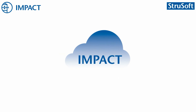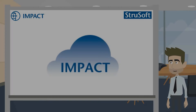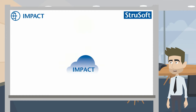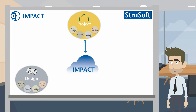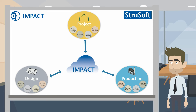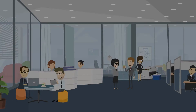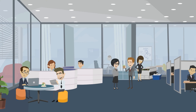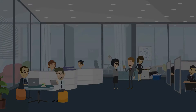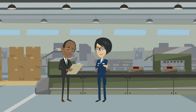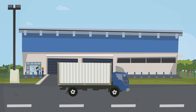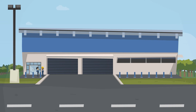IMPACT is a central BIM database that links your entire construction project together. Around the central database we have the three areas of IMPACT: project, design and production. Project lets you manage your projects. Design lets you design your element for prefabrication. Production lets you have full control of all the resources in the factory as well as transportation and planning.